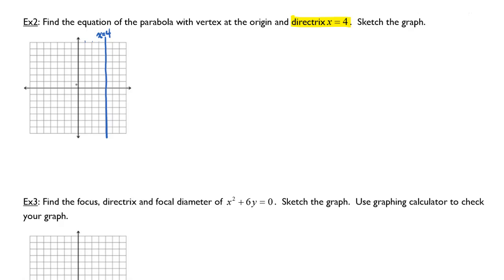I also have a vertex at the origin. And I know that the focus is always opposite the directrix, which means my focus will be at negative 4. This is my focus, this is my vertex, and the blue vertical line here is my directrix.